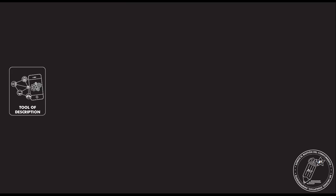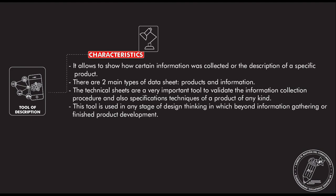This is a tool of description. It got the following characteristics: it allows to show how certain information was collected or the description of a specific product. There are two main types of data sheet — the one that describes a product, or the one that describes how information was collected. Technical sheets are a very important tool to validate the information and the technical specifications of a product of any kind. This tool is used in any stage of design thinking, whether in information gathering or finishing a product development.